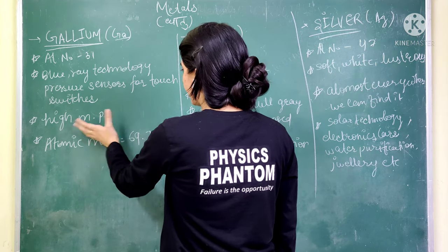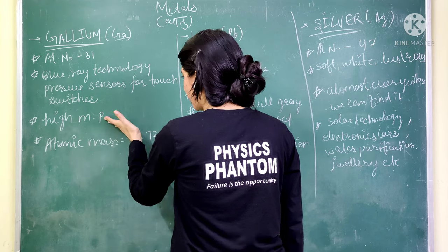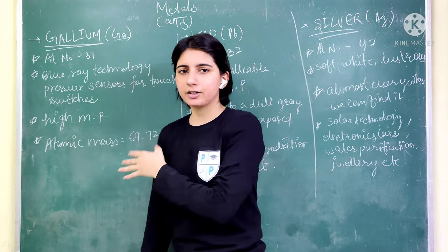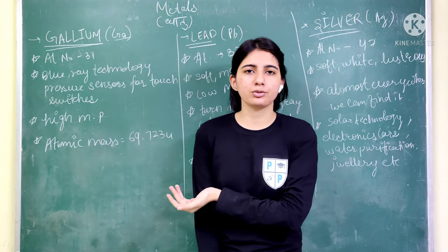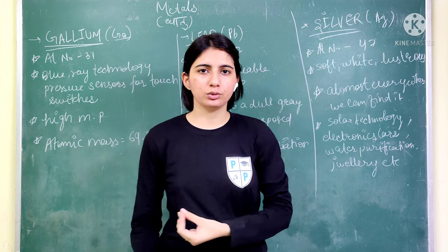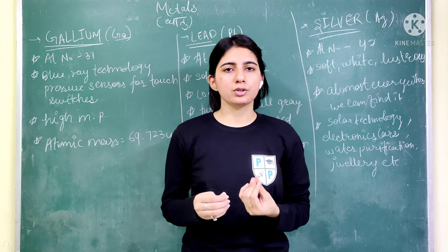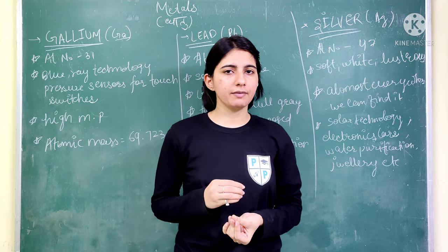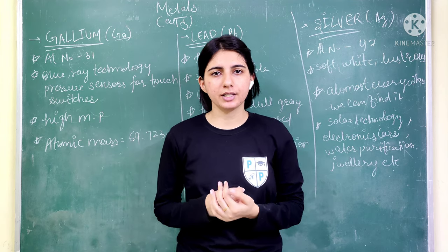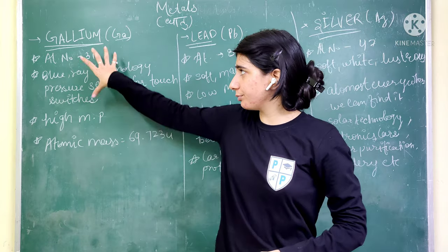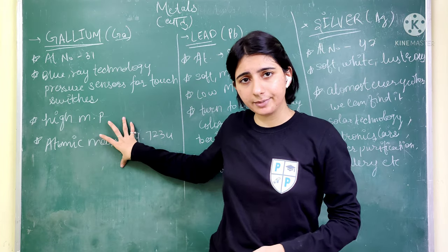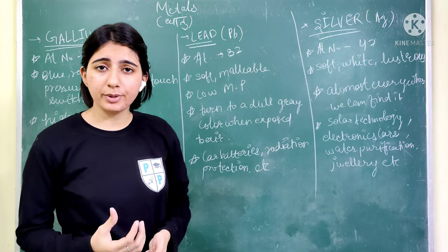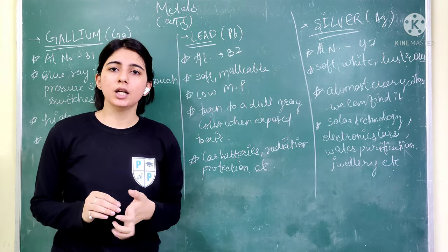The next important point is that its melting point is high. Besides that, its atomic mass is 69.72. These are some important points related to gallium. The next metal is lead.